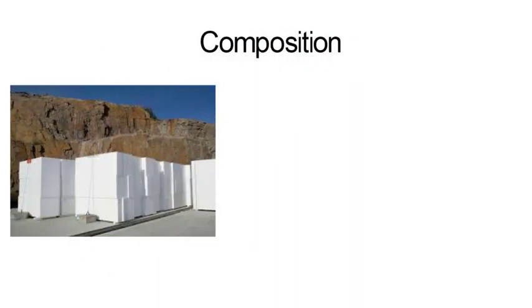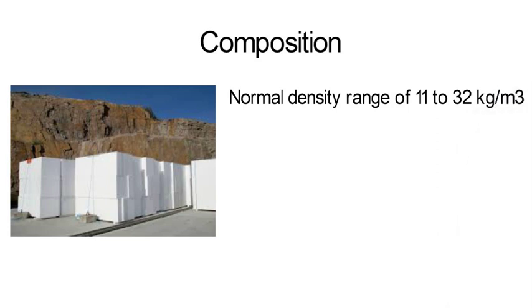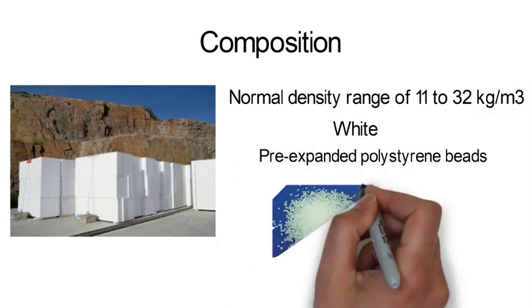Composition. Expanded Polystyrene is a rigid and tough closed cell foam with a normal density range of 11 to 32 kg per m³. It is usually white and made of pre-expanded polystyrene beads.